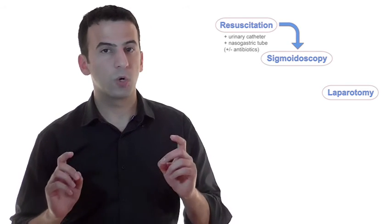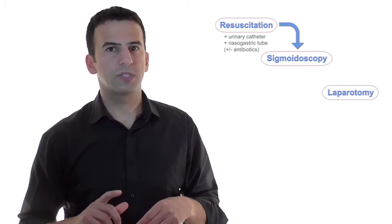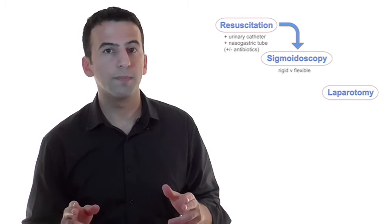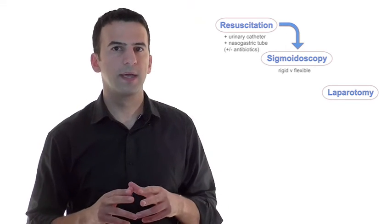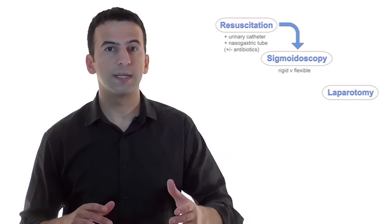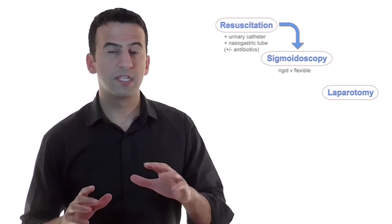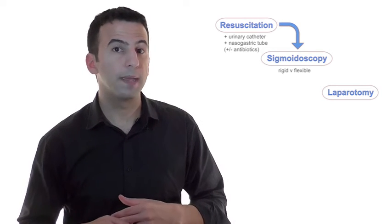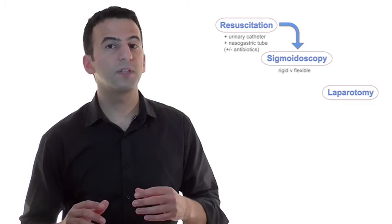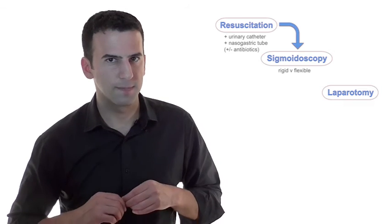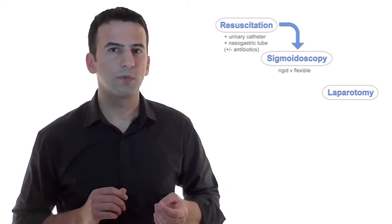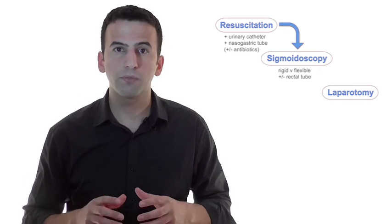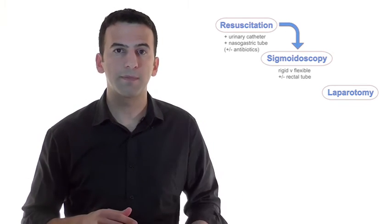Now since the point of torsion is often about 15cm from the anal verge, it might be within reach of a rigid sigmoidoscopy. Now this can be done at the bedside and may achieve decompression and reduction of the volvulus. Otherwise, a flexible sigmoidoscopy should be performed, which can be successful in up to 90% of cases. Whether rigid or flexible sigmoidoscopy is performed, if successful, a rectal tube for two or three days can help to further decompress the abdomen over this time.